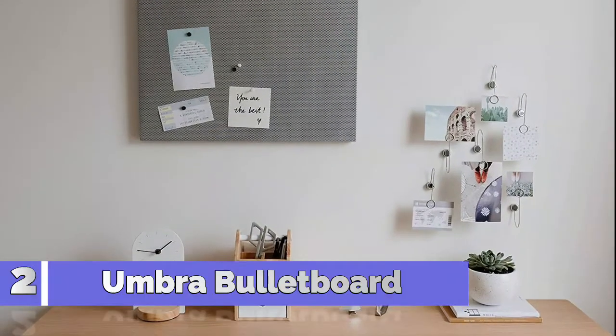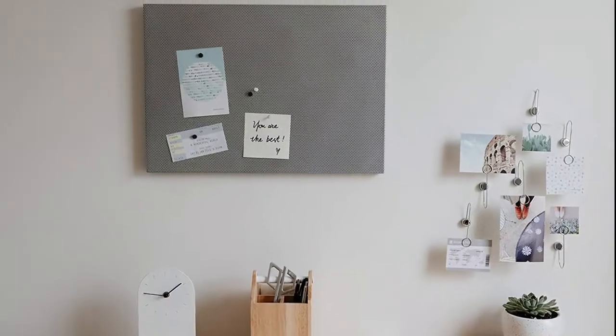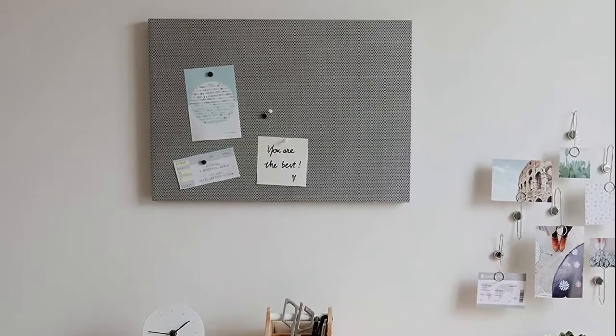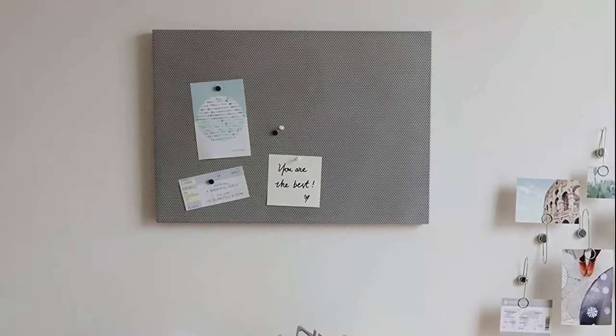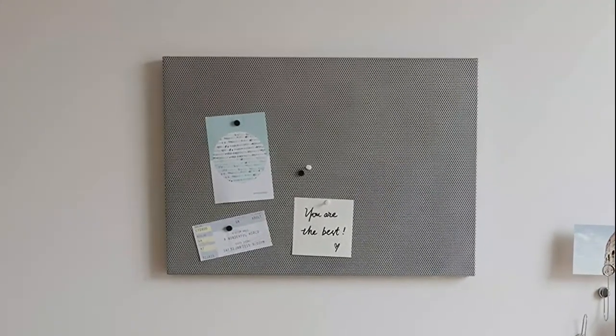Number 2, Umbro Bullet Board. Bullet board's unique patented design has a perforated metal surface that accommodates both push pins and magnets. This contemporary twist on the classic corkboard bulletin board brings a sleek look to your home or office and makes an ideal magnet board for kids.